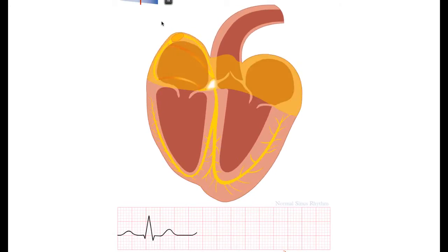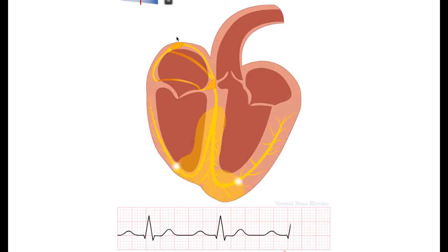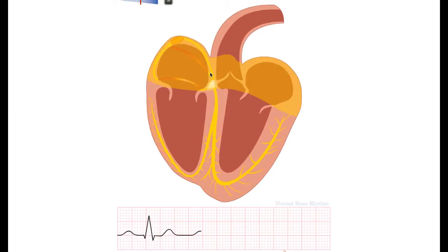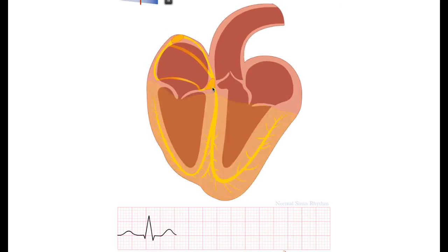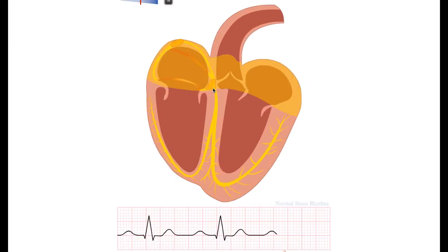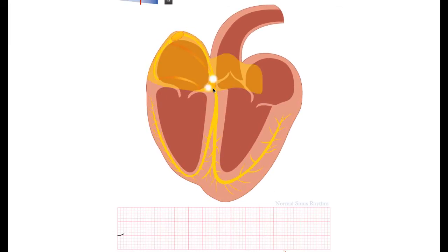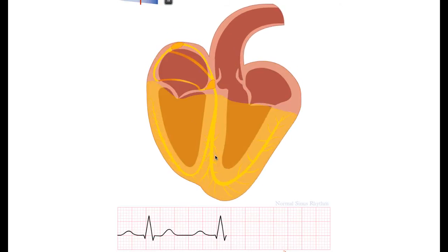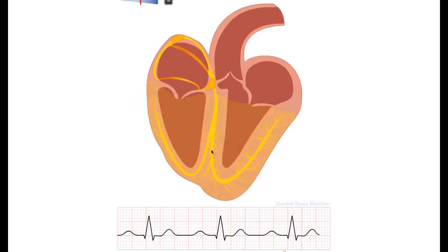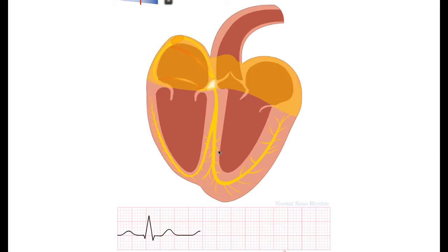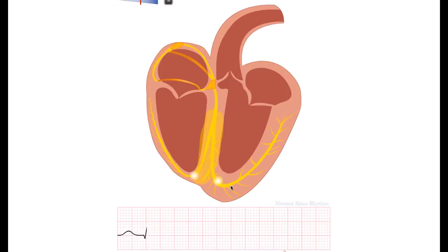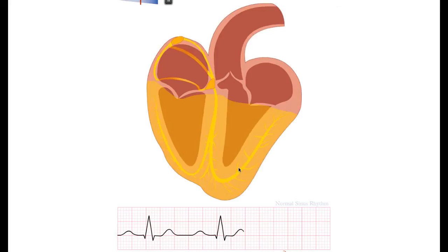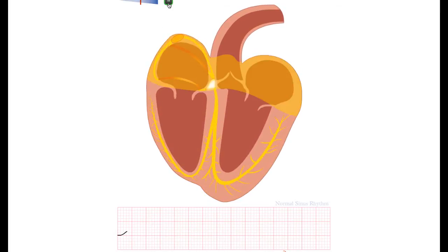The activation of the heart. You see that the activation starts in the sinus node, spreads through the atria, and goes to the AV node, which results in a small delay in cardiac electrical conduction. Then it jumps to the apical septum on the left side. And the septum is activated from left to right. Also the apex is activated first before the basal parts of the heart are activated.